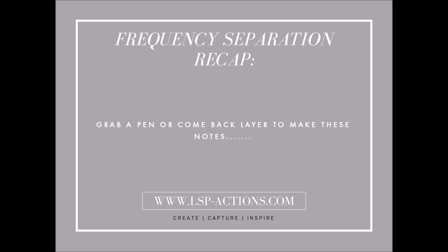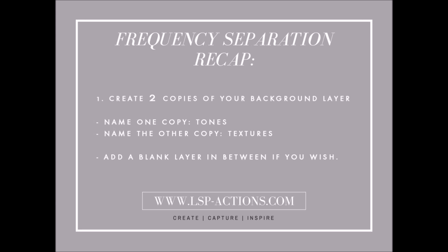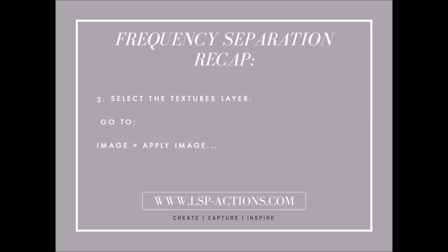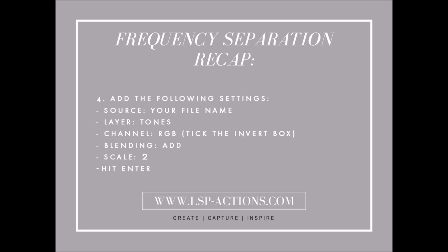Quick recap — get your pen ready. Step one: create two copies of your background layer, name one 'tones' and the layer above it 'textures.' You can add a blank layer in between if you want. Step two: select the tones layer and add a Gaussian Blur — I like somewhere between 10 and 15 pixels, though it depends on your image and how big the face is in the frame. You want to blur out all of the textures and details but keep the colors, so you can still see the picture if you stand back.